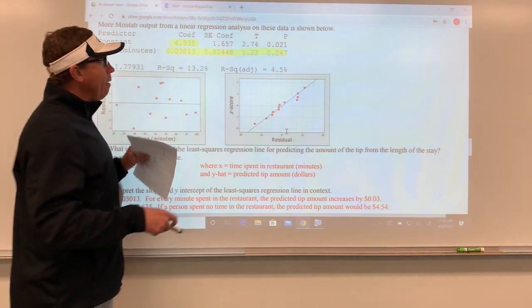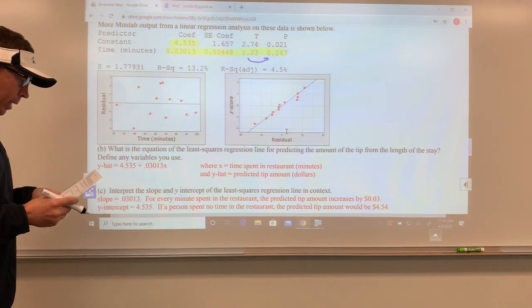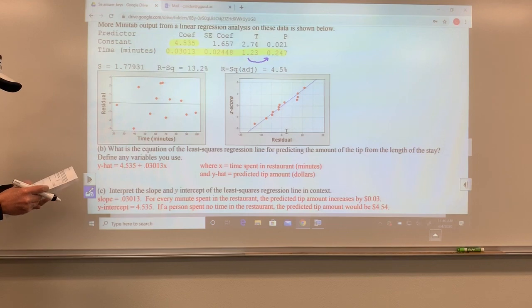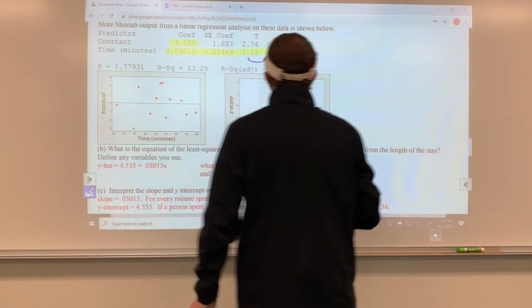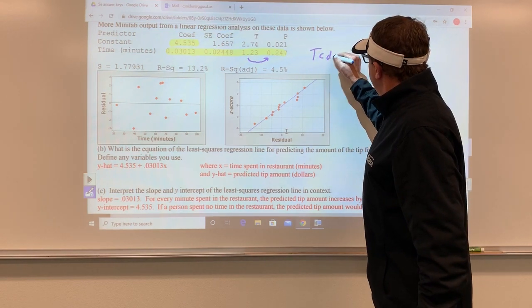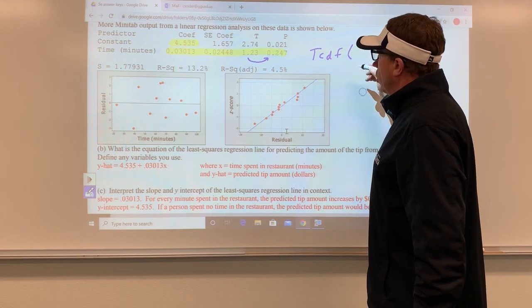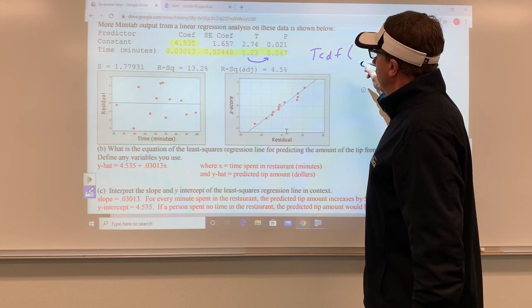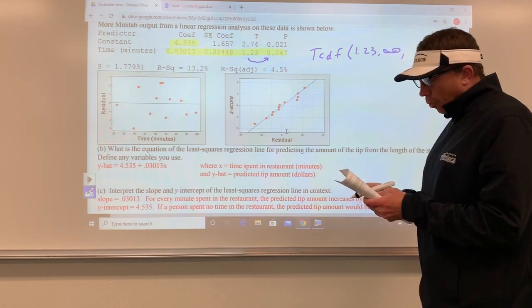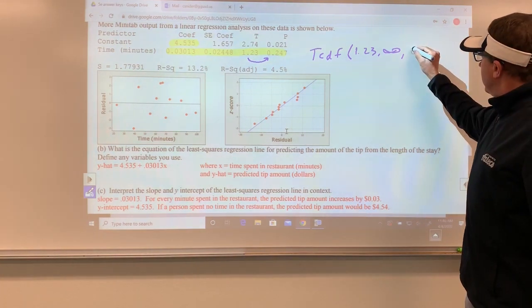How do you get a t-score of 1.23? You simply divide 0.03013 divided by 0.02448. That'll be that. Now this conversion right here is going to be done by using TCDF.